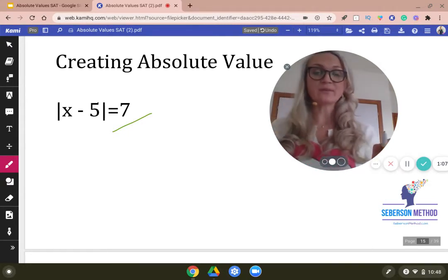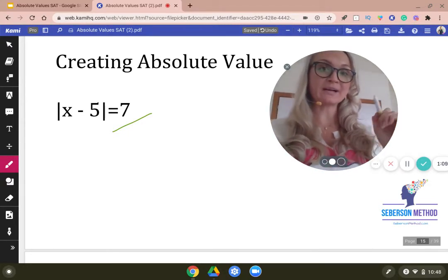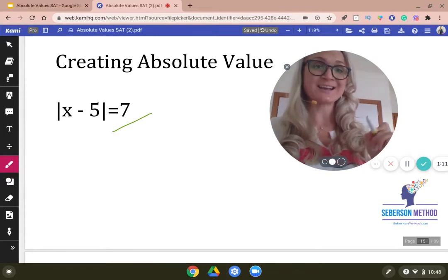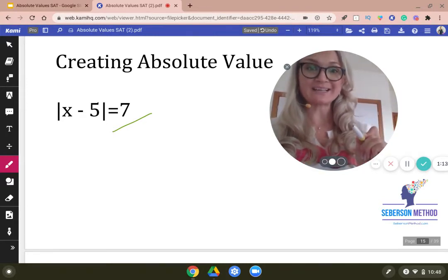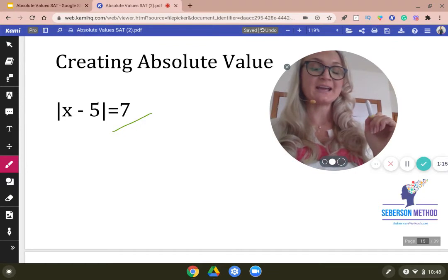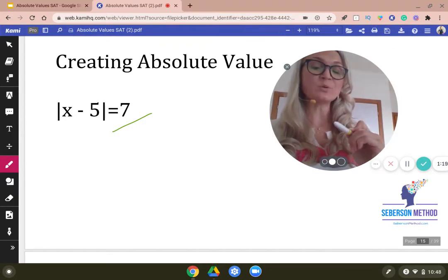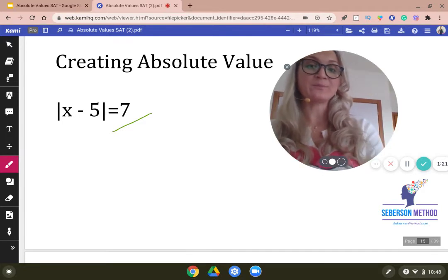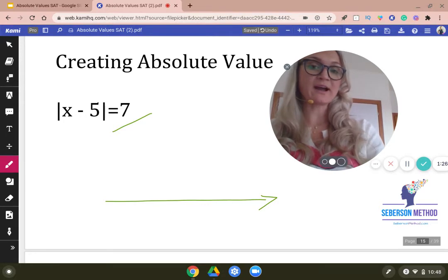So just know that the number outside denotes the distance. But what about the number that's inside? The number that's inside is denoting a coordinate that is equally distant from the other two coordinates. So if we were to graph this, we're going to have the x-axis. Negative 5 denotes that the coordinate is actually 5.